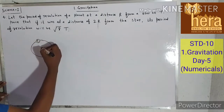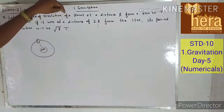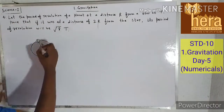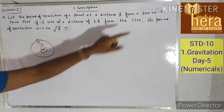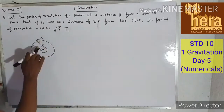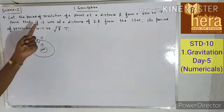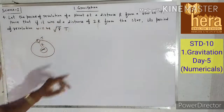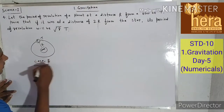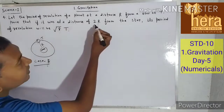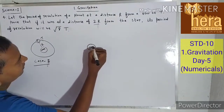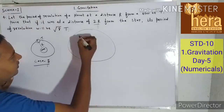Let the period of revolution of a planet at a distance R from a star be T. Draw the diagram: here is the star and here is the planet at distance R. The period of revolution of this planet is T when the distance between planet and star is R.